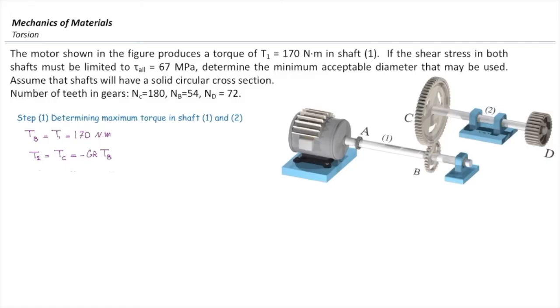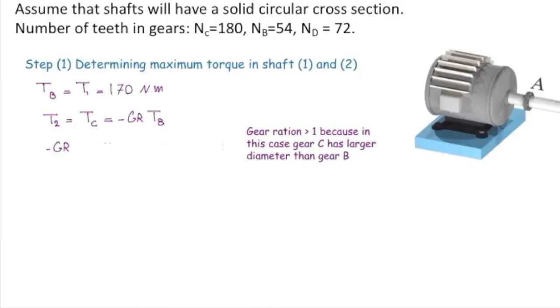Is the gear ratio NC divided by NB or NB divided by NC? To answer that, we need to look at the rules that we had before. Is torque increasing when I move from smaller gear B to larger gear C? Yes. So the gear ratio should be larger than 1. So gear ratio is the larger number, 180 or NC, divided by a smaller number, NB or 54, and that gives me 3.33.